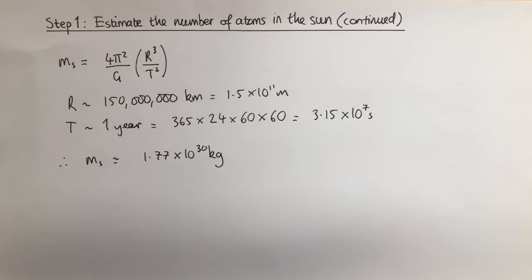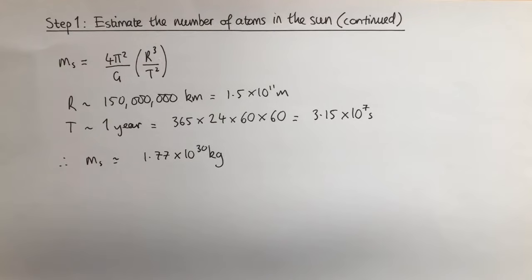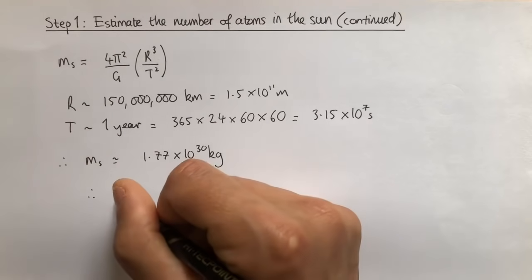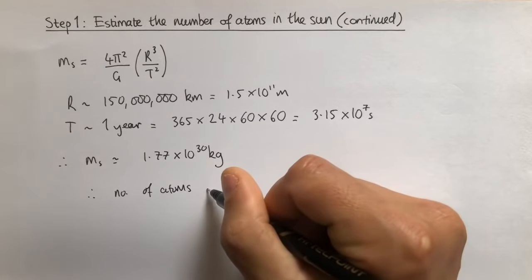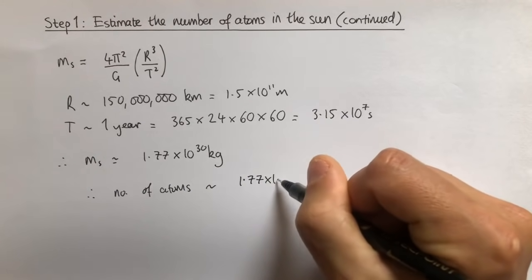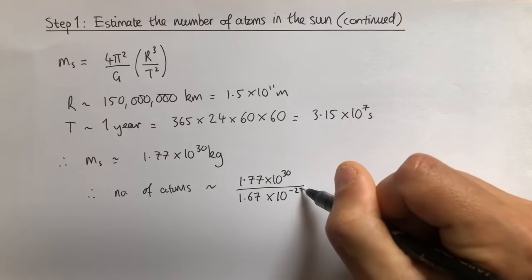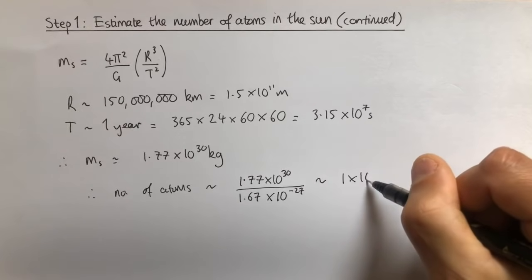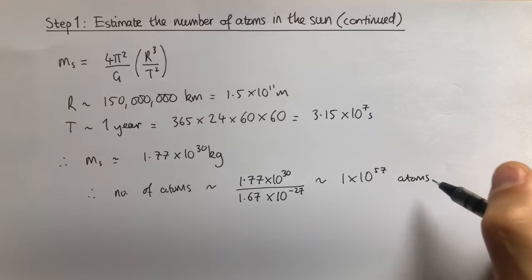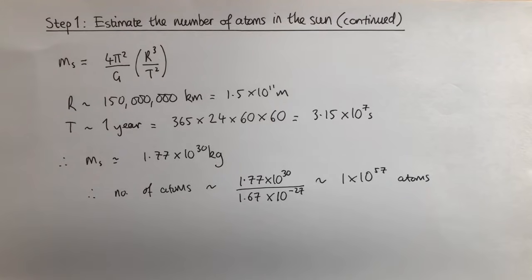Now that we have the mass of the Sun in kilograms, we need to estimate how many atoms make up that mass. One thing we know about stars is that the vast majority is comprised of hydrogen atoms. So an estimate of the number of atoms inside a star will be given by the mass of the star divided by the mass of a single hydrogen atom: 1.77×10³⁰ divided by 1.67×10⁻²⁷, which gives approximately 1×10⁵⁷ atoms. We will assume that a typical star contains around 10⁵⁷ atoms. This ends our first step.